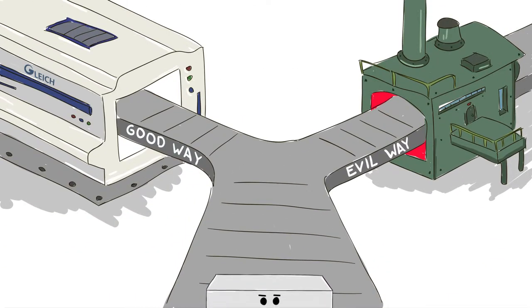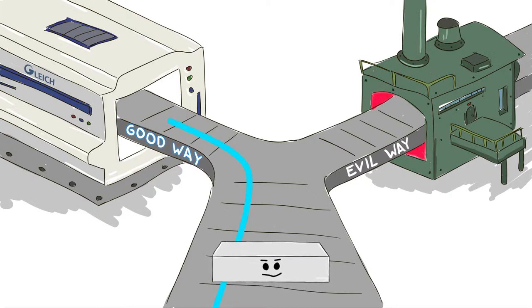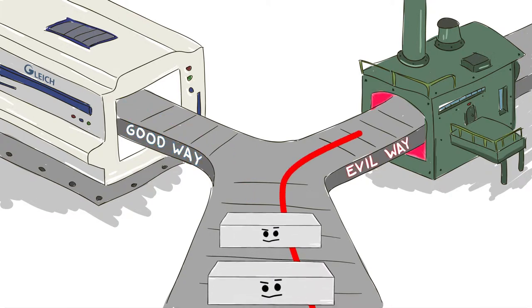Every aluminium block is either lucky to be processed into an aluminium cast plate, or unlucky to be processed into an aluminium rolled plate.